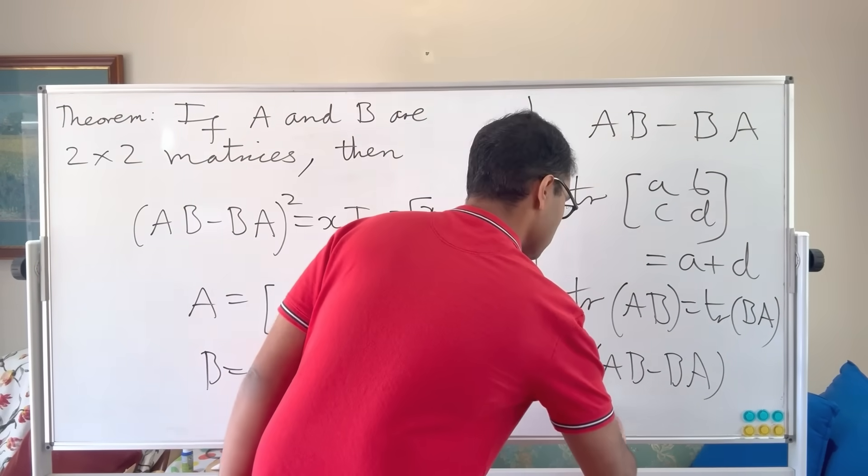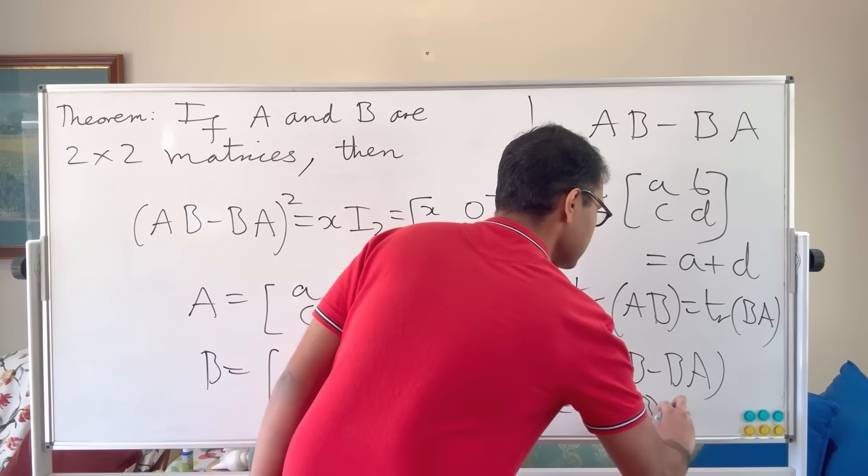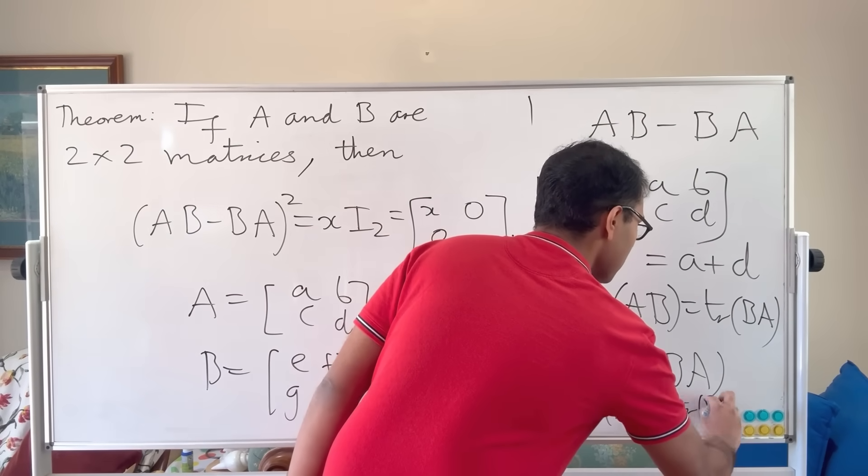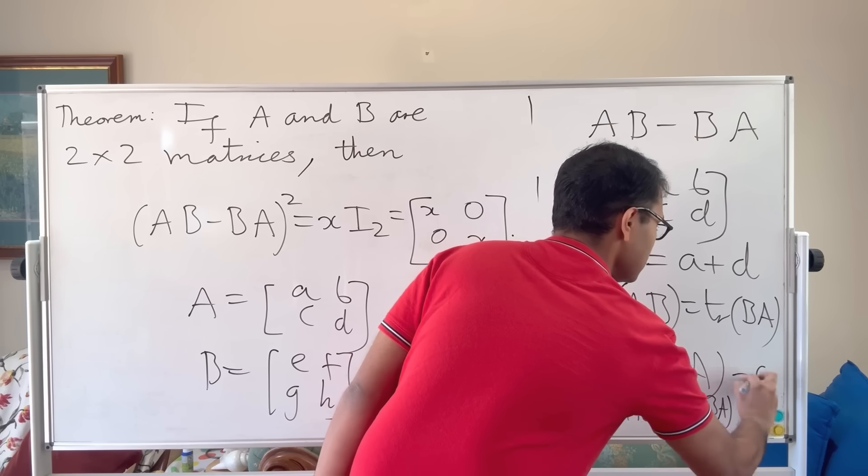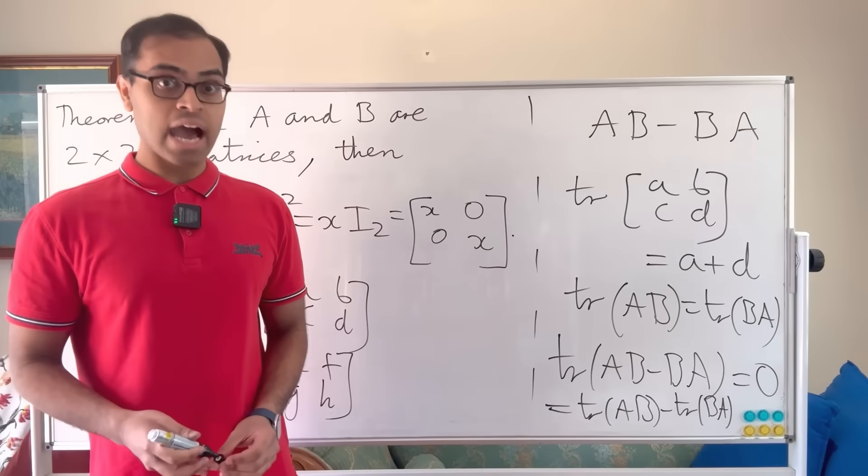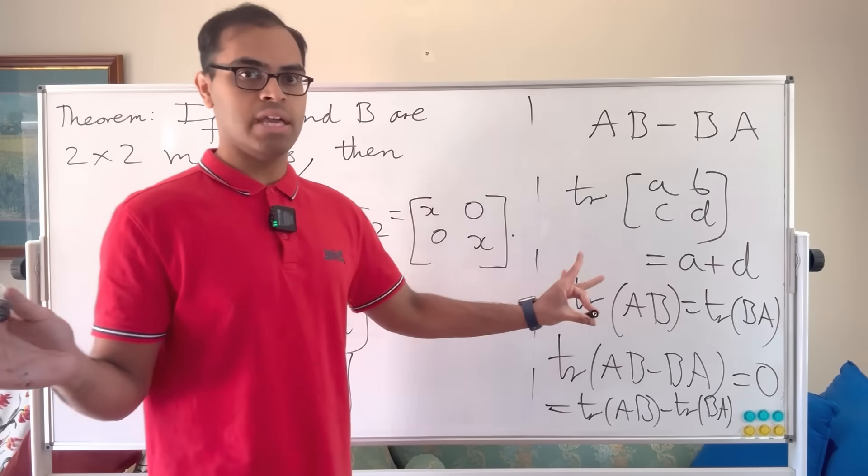So another way of writing that is this is trace of AB minus trace of BA. And because of what I just said, this is going to equal to 0 because the trace of AB and the trace of BA are equal. It's a general statement for n by n matrices.